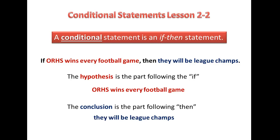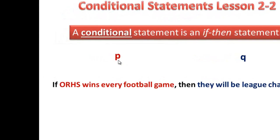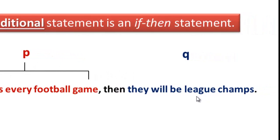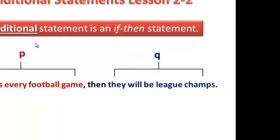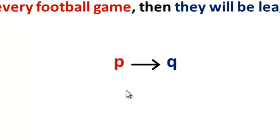Now, mathematicians are rather lazy, so we like to use shortcuts when we can. We're going to create a symbolic notation system for our conditional statements. Instead of writing the hypothesis 'Oak Ridge High School wins every football game,' we substitute and give that whole phrase the letter P. Instead of writing out the conclusion 'they will be league champs,' we give that the letter Q. Putting it all together with an arrow, we write it as: if P then Q, or P → Q.